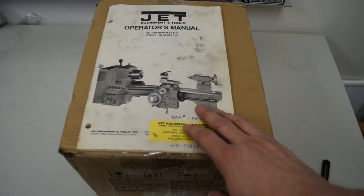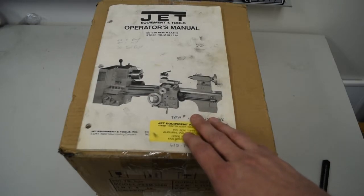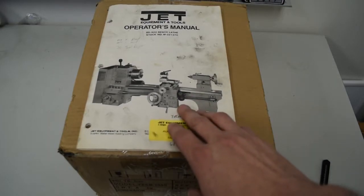A while back I picked up one of these Jet 9x20 lathes off of Craigslist. This is one of those Chinese made lathes that's sold under a dozen different brand names. Grizzly sells one, Enco, Harbor Freight, Pomida, MSC - all kinds of different companies sell the same exact lathe.